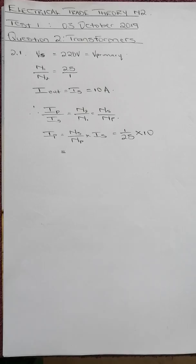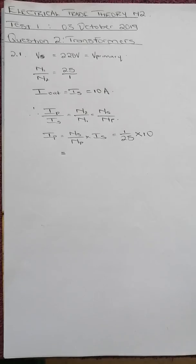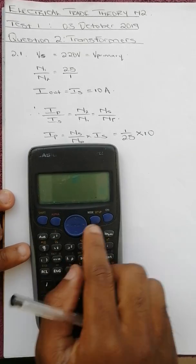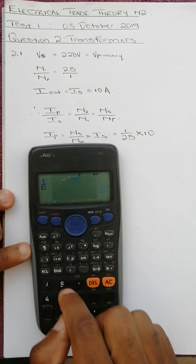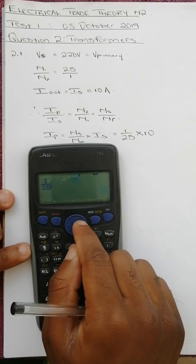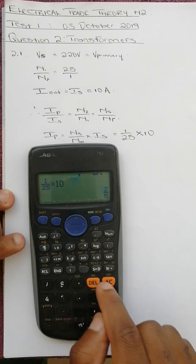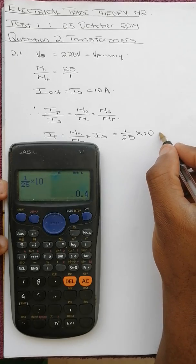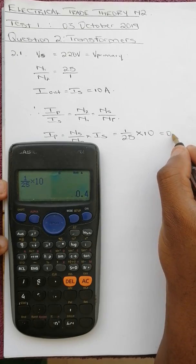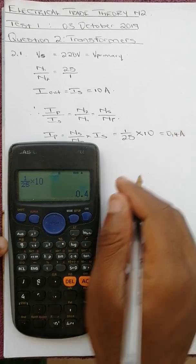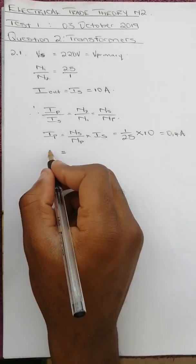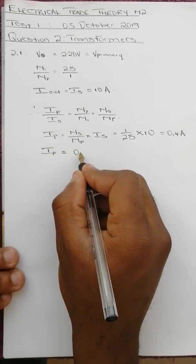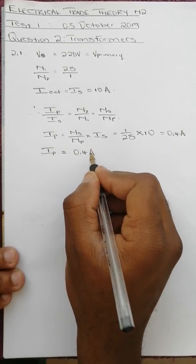1 over 25 times 10 gives us 0.4 amps. Therefore I primary equals 0.4 amps.